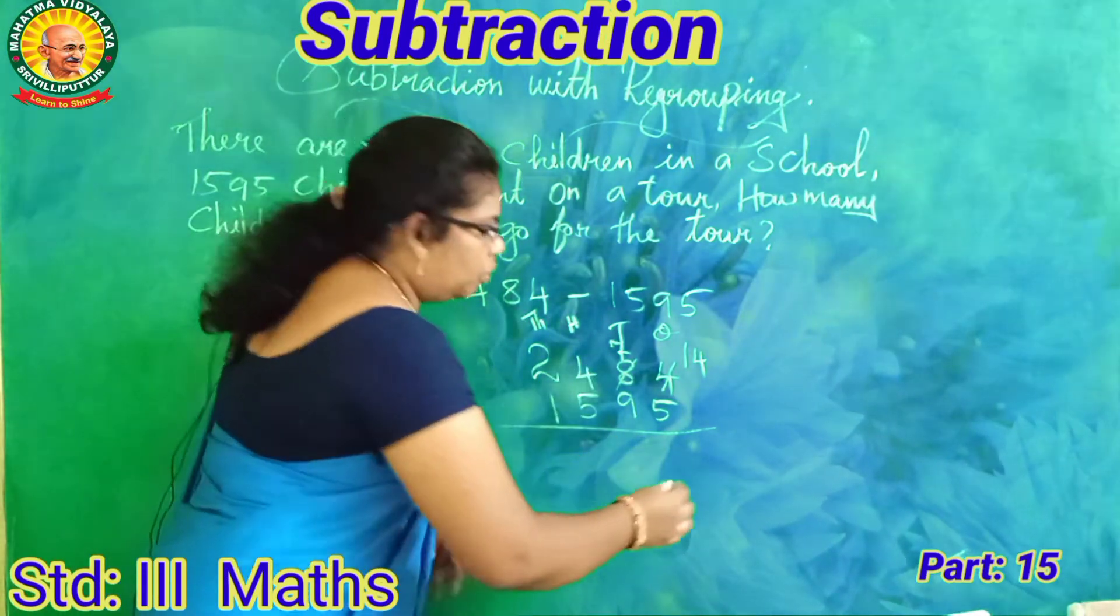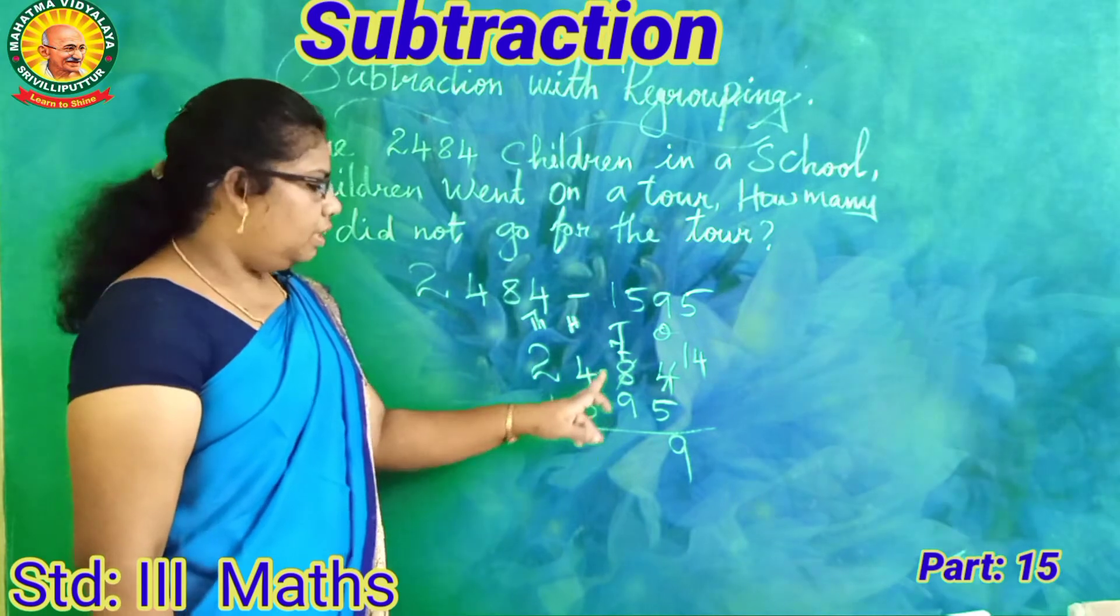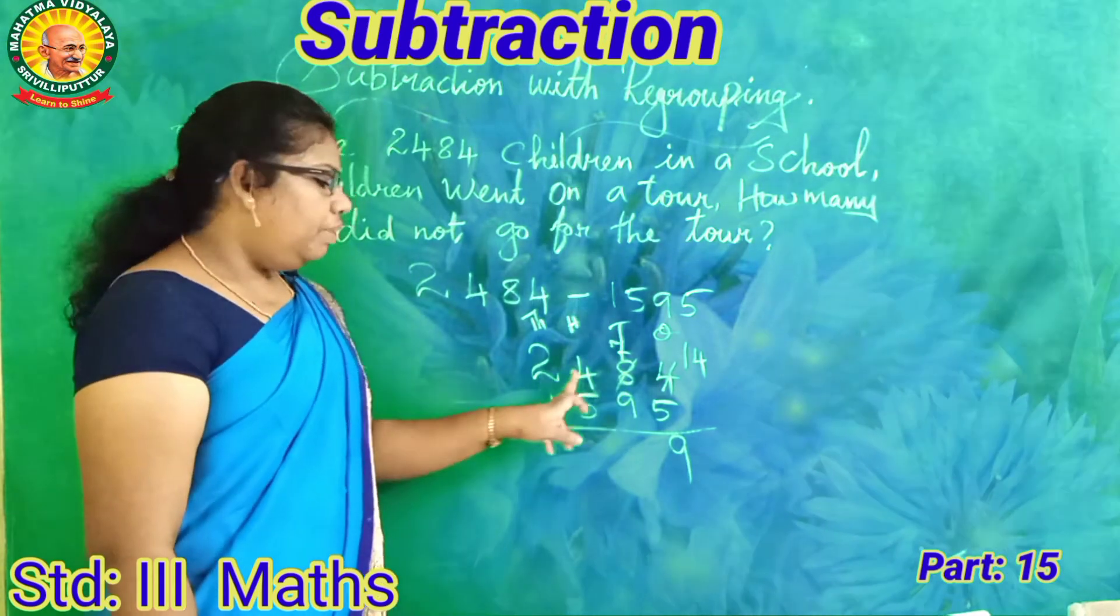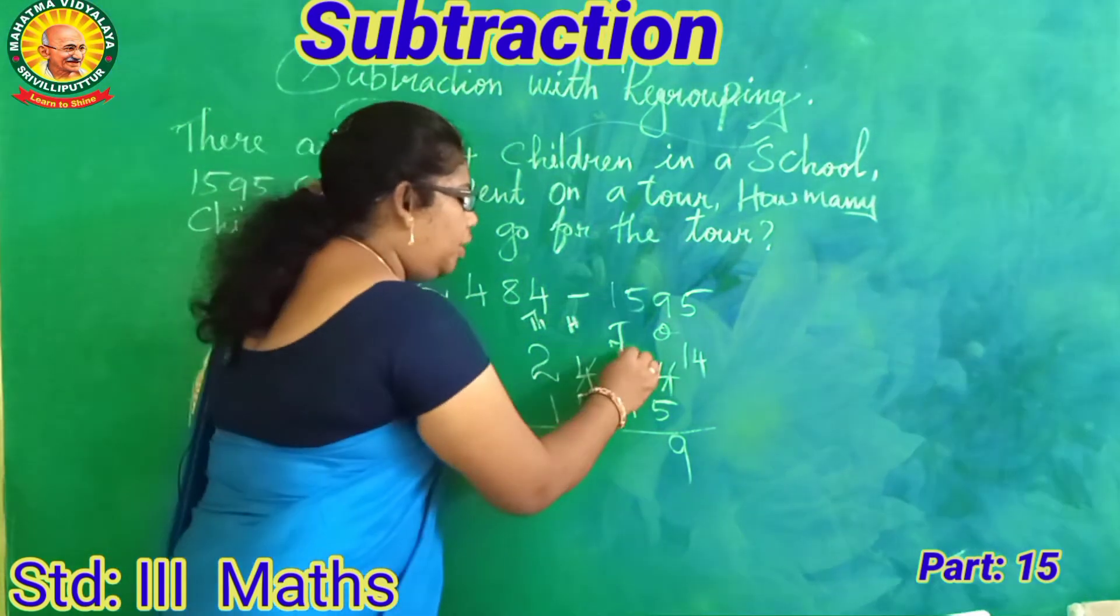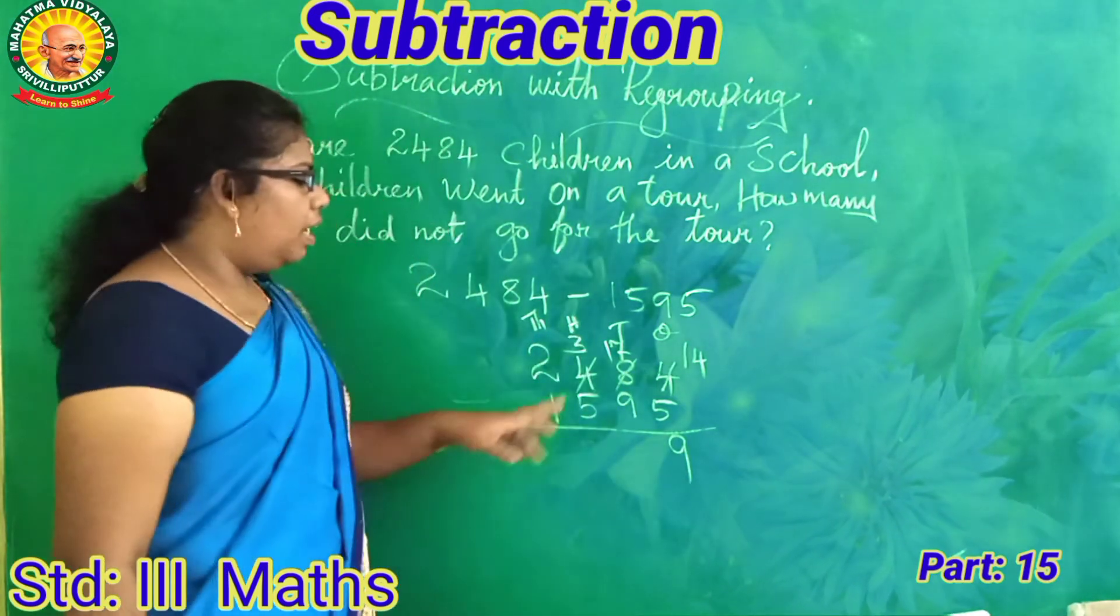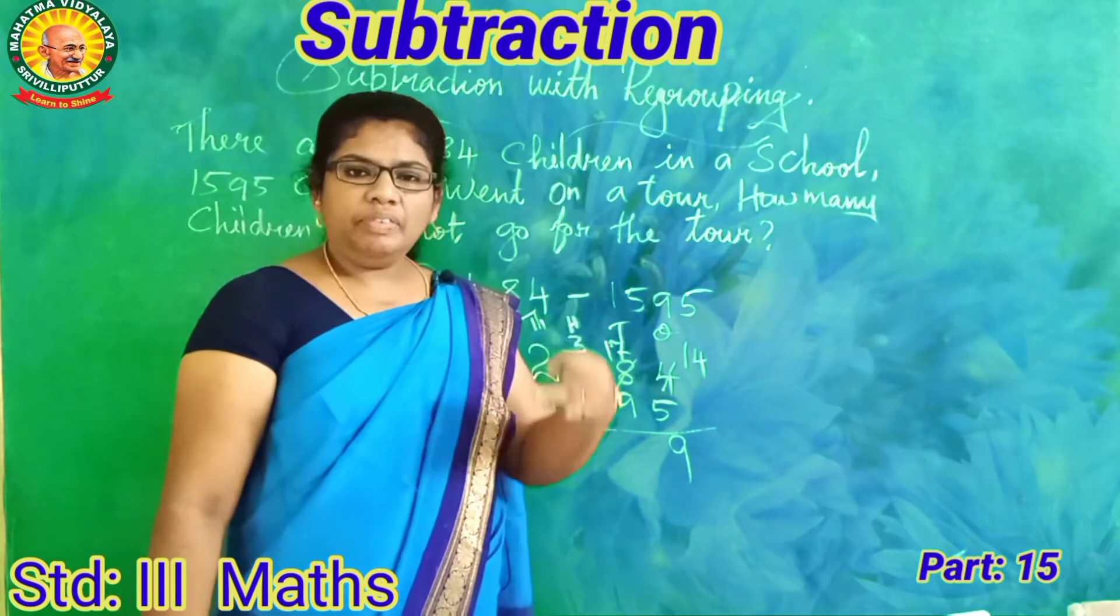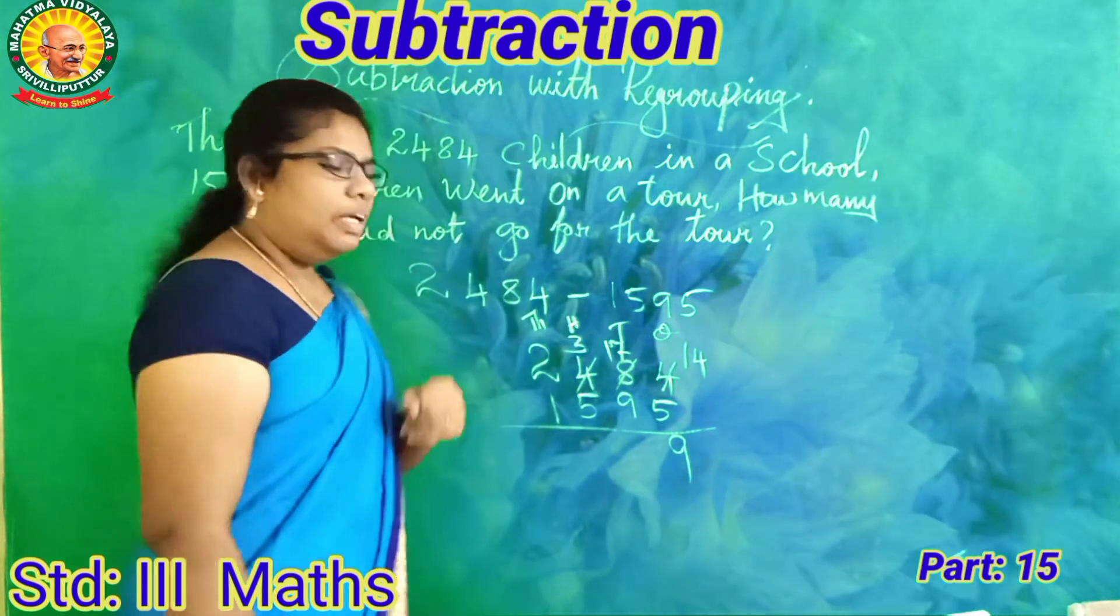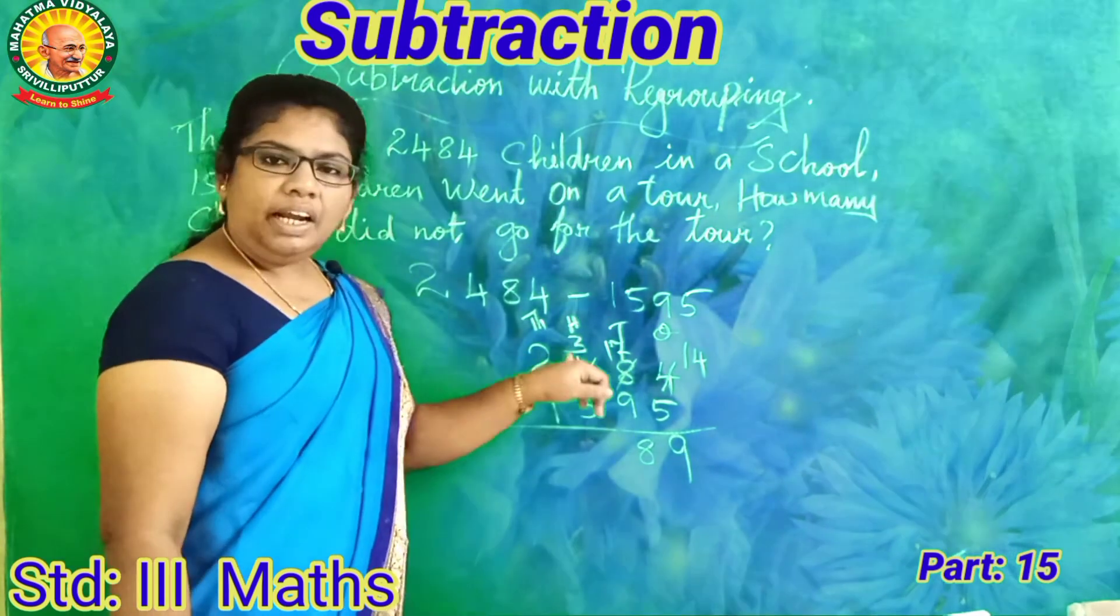And look at the tens. How many tens here? Seven tens. Seven tens minus nine tens. Can we subtract? No. So we have to borrow from hundreds. One hundred borrowed gives us seventeen tens. Seventeen minus nine equals eight tens.